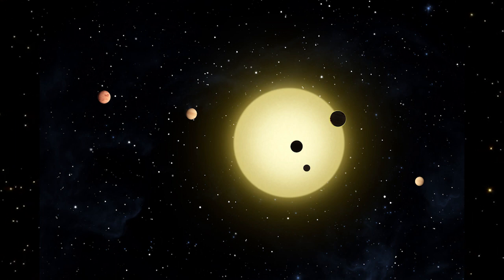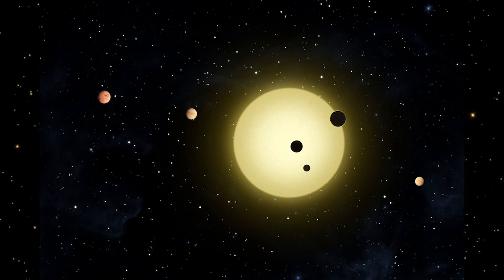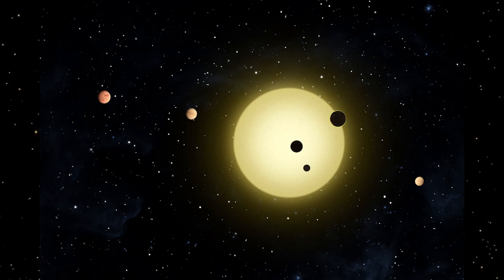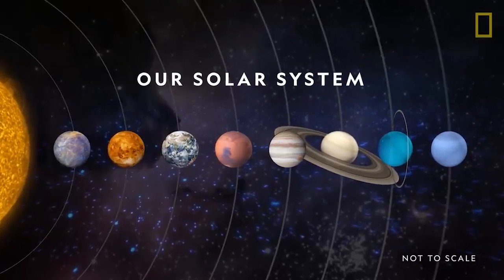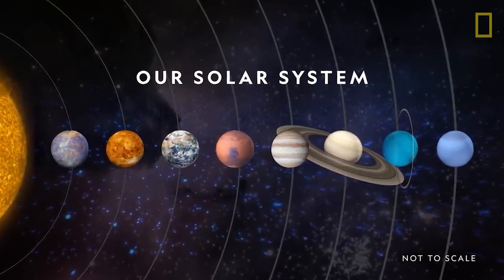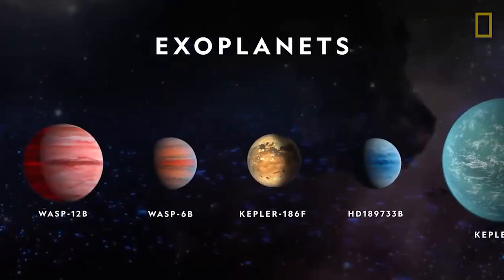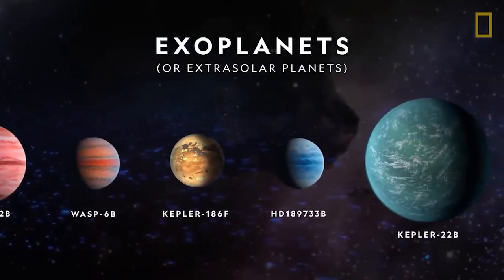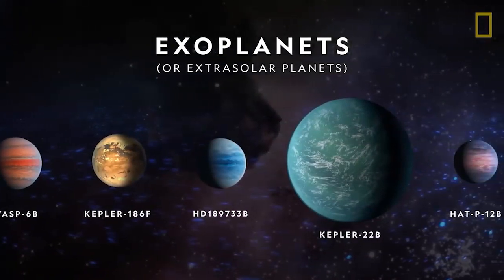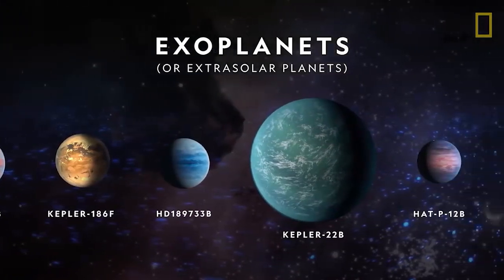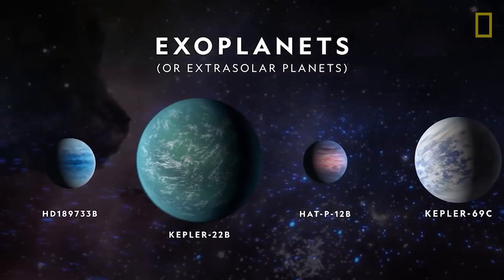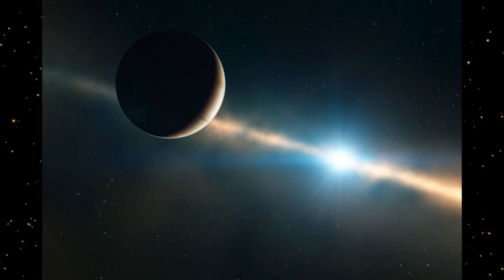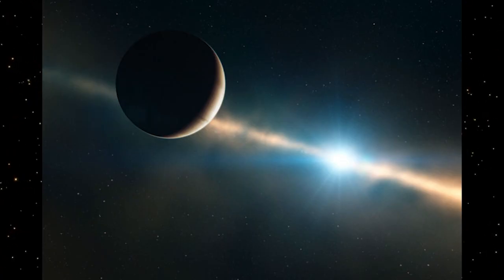We all learned in elementary school that the planets in our solar system, like Earth, Mars, or Jupiter, orbit around the Sun in concentric circles at different distances. At this very moment, the Earth is following this pattern. However, there are planets that orbit stars other than the Sun, called exoplanets. These exoplanets are difficult to detect with telescopes because the star they orbit produces a very strong glare, which makes them nearly undetectable.